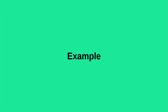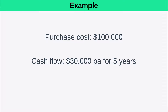Let's look at an example to bring this to life. Imagine you run a company and you're considering purchasing a new piece of equipment that is going to cost $100,000. You're expecting that investment to generate cash flows of $30,000 per annum for the next five years. We're also going to assume a discount rate of 10%. You can think of the discount rate as the minimum hurdle rate that your investment must achieve each year in order for the investment to be worthwhile.